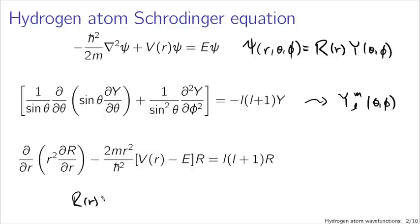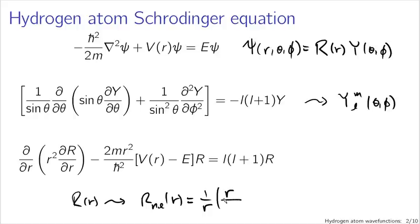Our capital R of r function required some changes of variables, but what we got in the end was R_nl as a function of r. As a change of variables, we factored out a 1/r, then factored out asymptotic forms before doing a power series solution, giving us (r/Na)^(l+1) times e^(−r/Na). Those were our asymptotic forms, and then we ended up with some polynomial of r/Na. These polynomials turned out to be associated Laguerre polynomials.